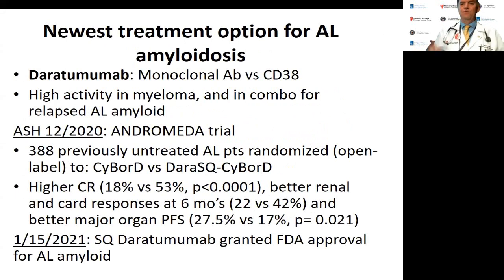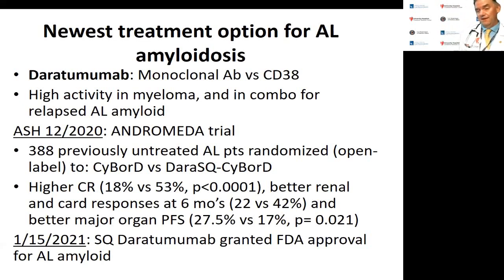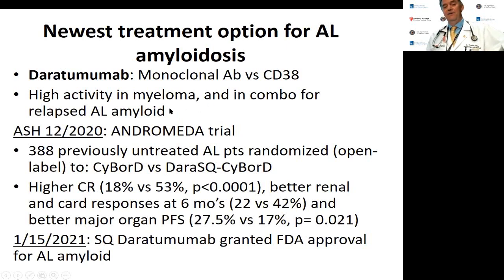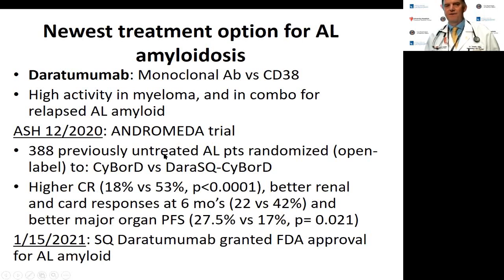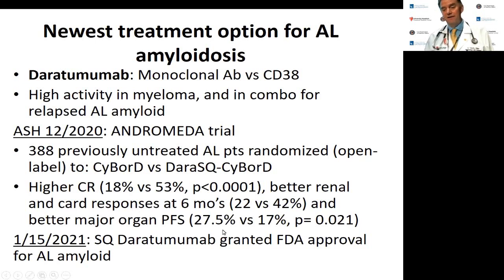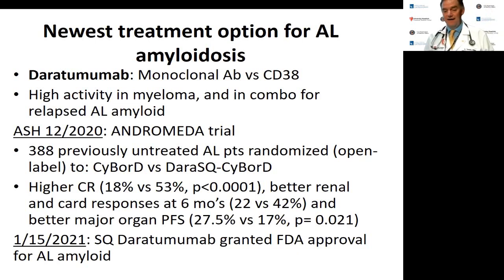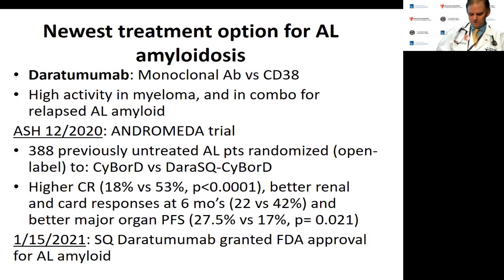The newest agent is daratumumab — a monoclonal antibody against CD38, expressed on plasma cells and stem cell precursors, with high activity in myeloma. The Andromeda trial randomized nearly 400 previously untreated AL patients to CyBorD versus CyBorD plus subcutaneous daratumumab. The daratumumab arm had higher response rates, better renal and cardiac responses at six months, and better major organ progression-free survival. This led to FDA approval approximately two to three weeks before this lecture, and the speaker's institution had just started a patient on it.